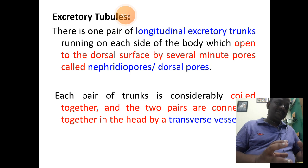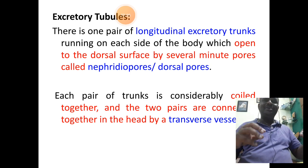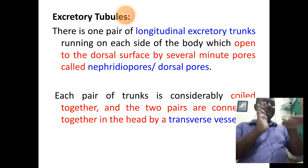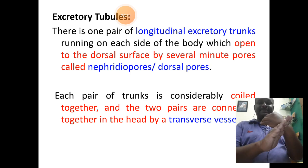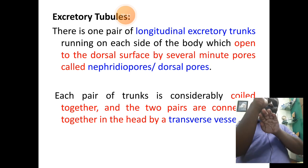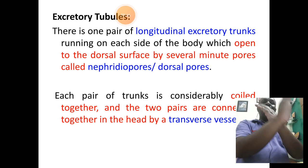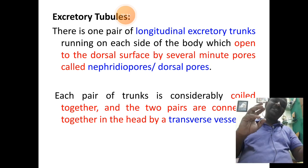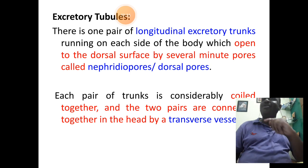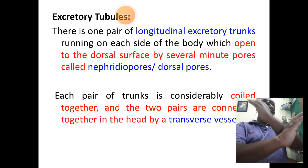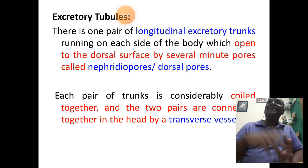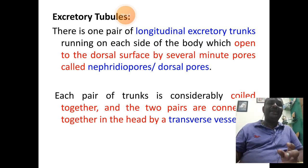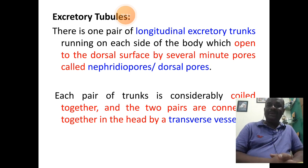These excretory trunks are further branched out. Some branches are positioned towards the inside, moving towards the inner surface; some move towards the outside, that is towards the dorsal surface. The inner branch ends at the structures of flame cells or solenocytes, while the outer branch forms the excretory pore outside, referred to as the dorsal pore or nephridiopores. This is the importance of the excretory trunk.